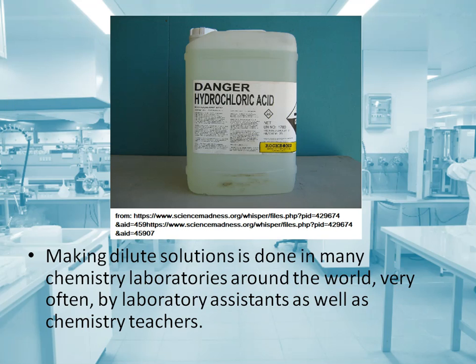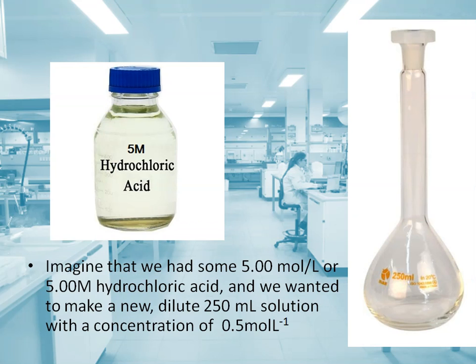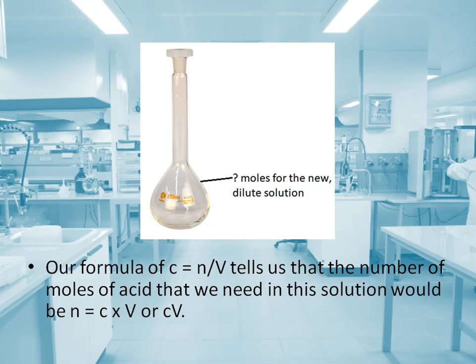Making dilute solutions is done in many chemistry laboratories around the world, very often by laboratory assistants as well as chemistry teachers. Imagine that we had some five moles per liter, or five molar, hydrochloric acid and we wanted to make a new dilute 250 milliliter solution with a concentration of 0.5 moles per liter. Our formula of C equals n divided by V tells us the number of moles of acid we need.